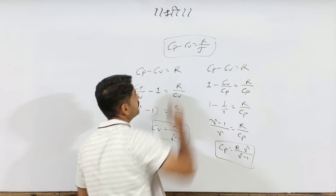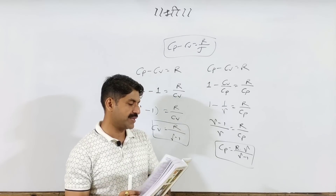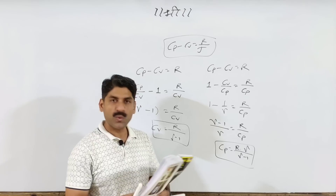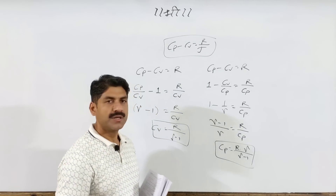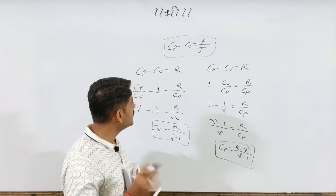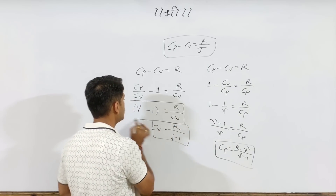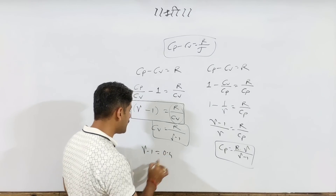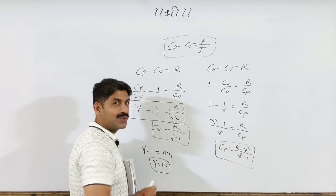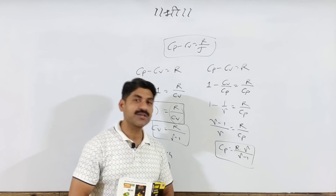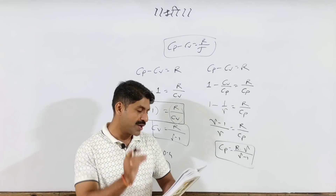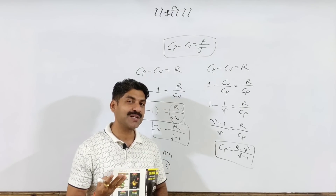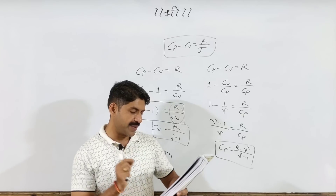In mechanical units, Cp minus Cv equals R/J, where J is the mechanical equivalent of heat. Now a numerical problem: if R/Cv equals 0.4, then gamma minus 1 equals 0.4, so gamma equals 1.4. As we know, gamma equals 1.4 means the gas is rigid diatomic. So the answer is rigid and diatomic.